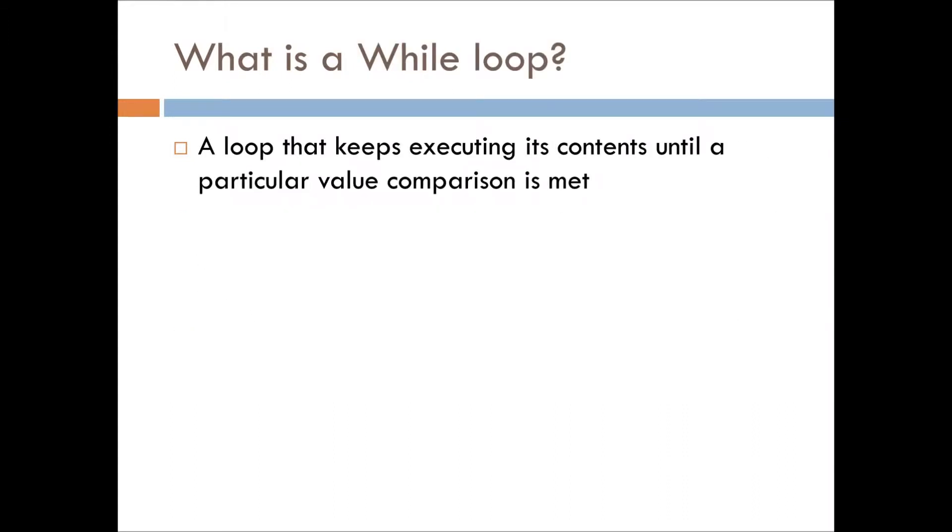So what is a while loop? It is a loop that keeps executing its contents until a particular value comparison is met. We saw an example on the previous slide of a while loop. There's many other combinations. Basically, you're doing a variable comparison, and that condition needs to be met. Typically, you iterate that value if it's like an integer or a float in the while loop, iterating meaning you increase the value or decrease the value each time you call the loop.